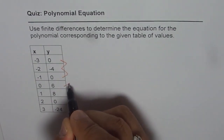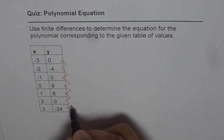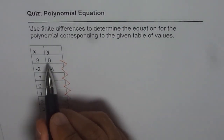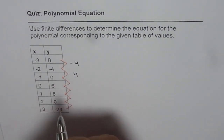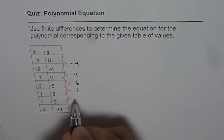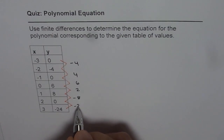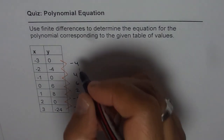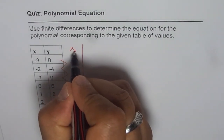We compute: 0 minus minus 4, 6 minus 0, 8 minus 6, 0 minus 8, and minus 24 minus 0. So we get minus 4, then plus 4, 6, 2, minus 8, and minus 24. This first difference is not constant.